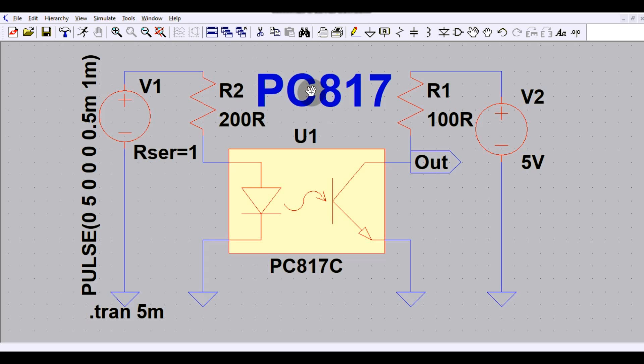Wherever you need an isolation you can use this optoisolator or PC817. This is most commonly used isolator. If you go and look at the data sheet of PC817, it gives 5 kV isolation between this side and this side.